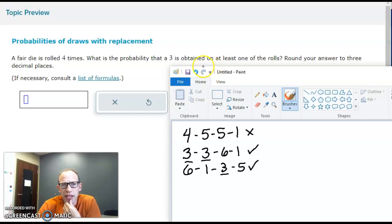So what's the chance that you don't get any threes? Well, probability of no threes. Well, that would be the chance that you don't get a three on the first one.